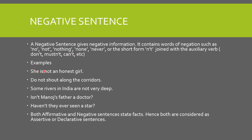Examples of negative sentences: 'She is not an honest girl.' 'Do not shout along the corridors' (or 'Don't shout along the corridors'). 'Some rivers in India are not very deep.' 'Isn't Manoj's father a doctor?' — this is both negative and interrogative. 'Haven't they seen a star?' — also both interrogative and negative. Both affirmative and negative sentences state facts; hence both are considered assertive or declarative sentences.